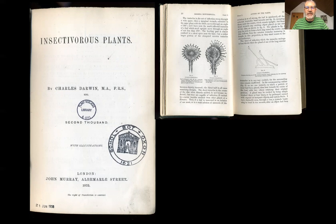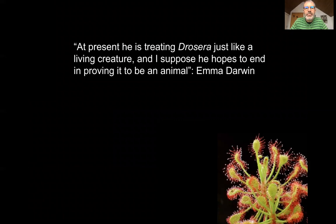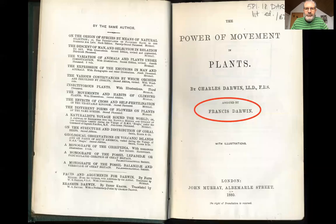He would feed the plants with different types of insects and other materials to see how the plants behaved. He was so fascinated — almost obsessed — that his wife Emma said about them: 'At present he is treating Drosera just like a living creature' — presumably she means an animal here — 'and I suppose he hopes to end improving it to be an animal.'